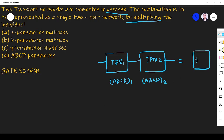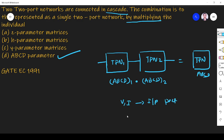So the answer is option D — ABCD parameter. The reason is that the ABCD parameter relates the voltage and current at the input port to the voltage and current at the output port. So it is best represented in ABCD parameter when two systems are connected in cascade.